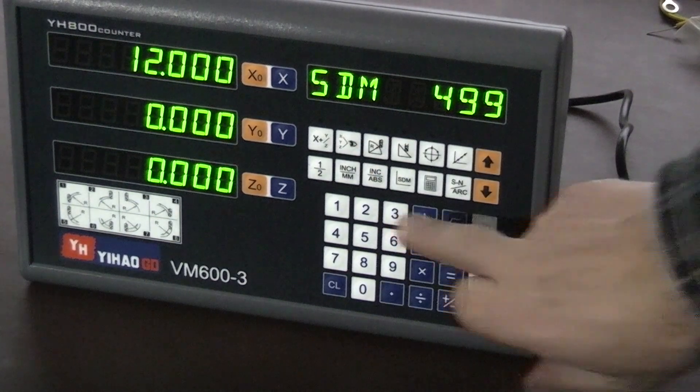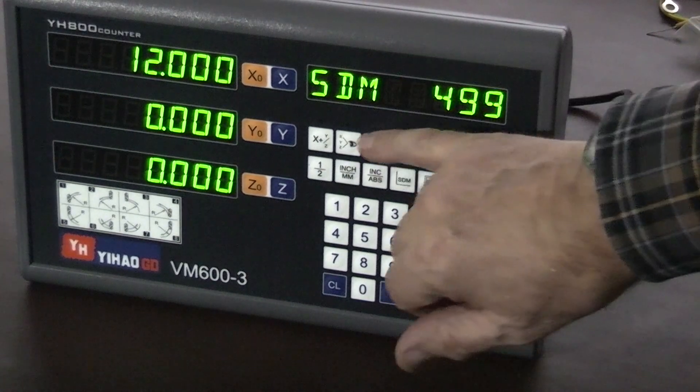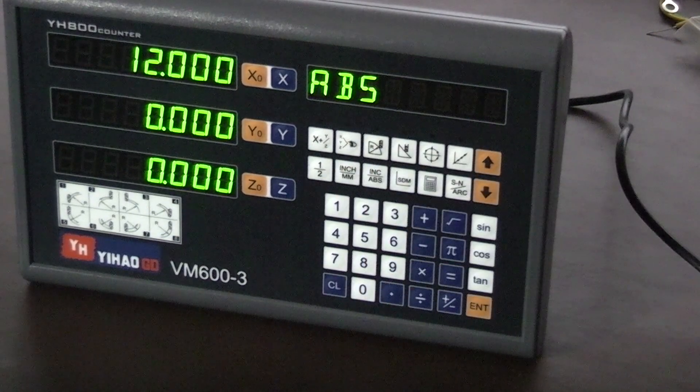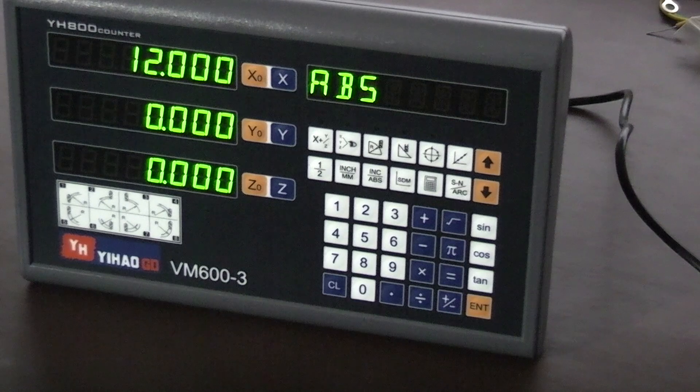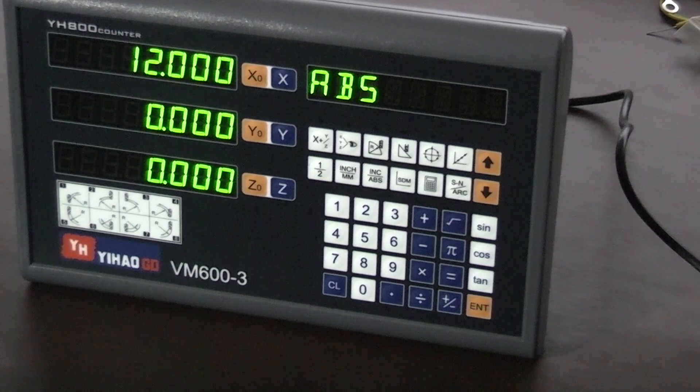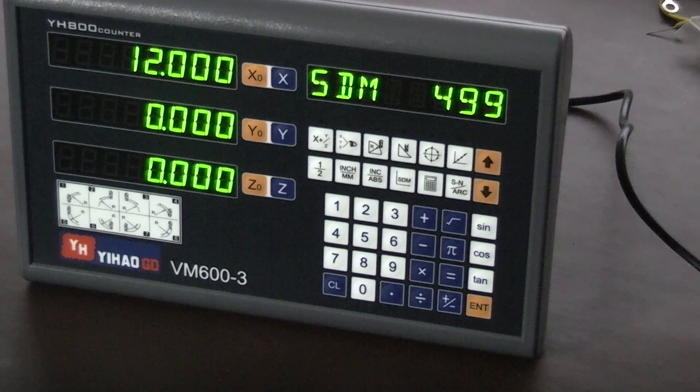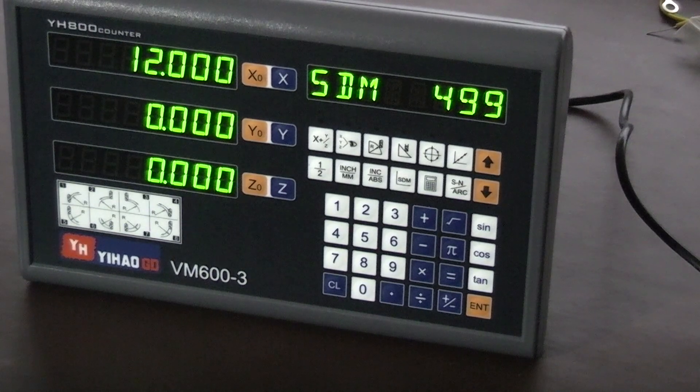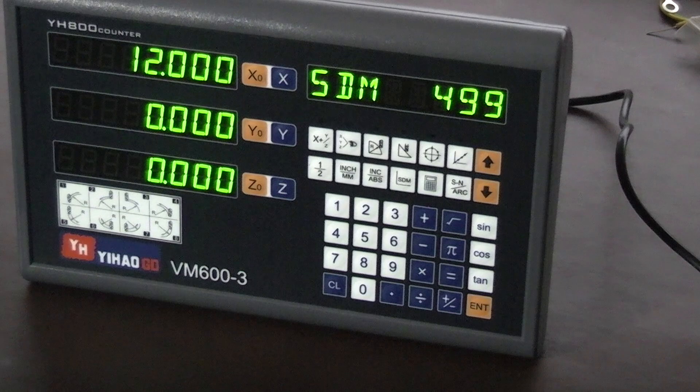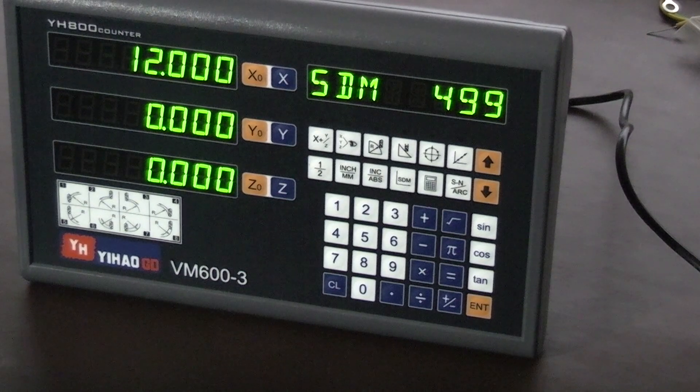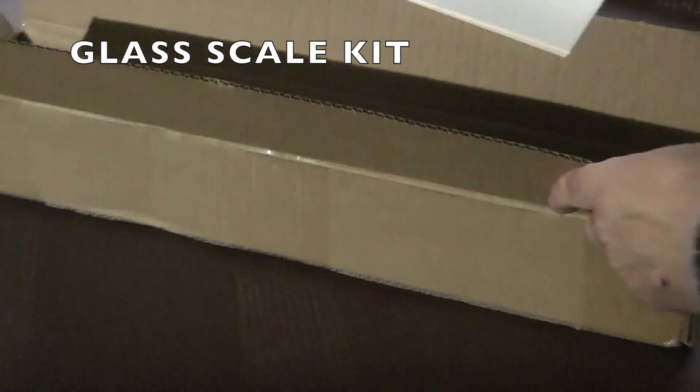And then you've got a normal calculator function. So one of the problems that somebody had with the other display was it only held 200 sub datums. This display holds 499 sub datums.